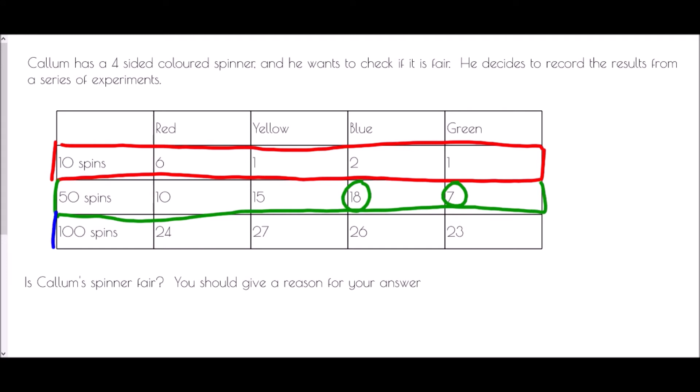But then finally when we come to 100 spins, once we've completed 100 spins we now have 24, 27, 26, 23. Now if this was a fair spinner, we would be expecting that a quarter of them would come out as red, a quarter would come out as yellow, a quarter as blue, and a quarter as green. And so we'd be expecting 25, 25, 25, 25.